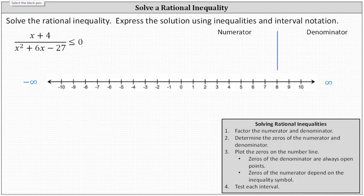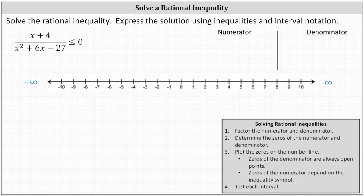We're asked to solve the rational inequality and express the solution using inequalities as well as interval notation. The first step of solving a rational inequality is to factor the numerator and denominator, which means in our case, the first step is to factor x squared plus 6x minus 27.